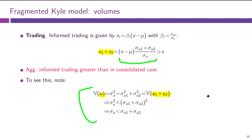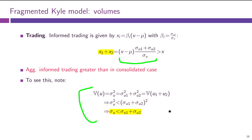If we take variances, we get that variance of U is sigma_U squared. Variance of U1 plus U2 is sigma_U1 squared plus sigma_U2 squared plus the covariance of U1 and U2, which is zero because we assumed they are independent. So sigma_U squared equals the sum of squares. But the sum of squares is smaller than the square of the sum — since (sigma_U1 + sigma_U2)² equals sigma_U1² plus sigma_U2² plus 2·sigma_U1·sigma_U2, which is positive. Therefore sigma_U is smaller than sigma_U1 plus sigma_U2.